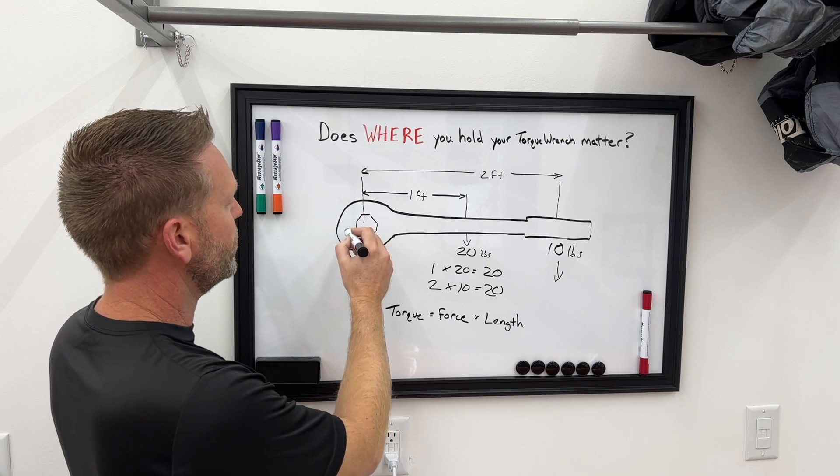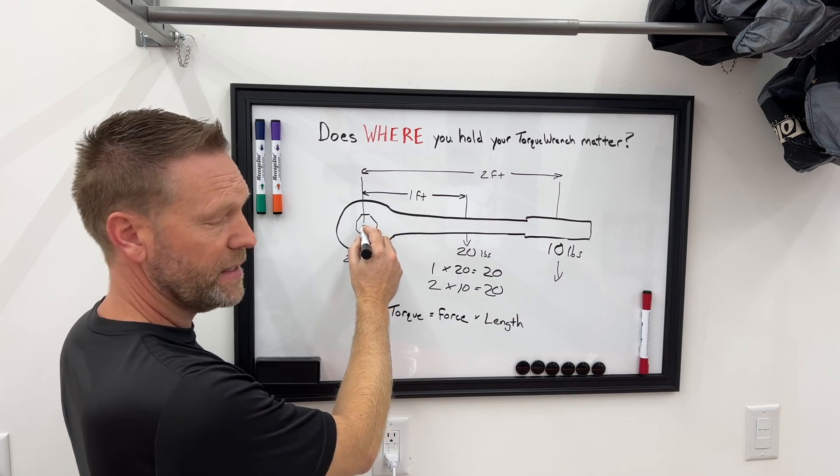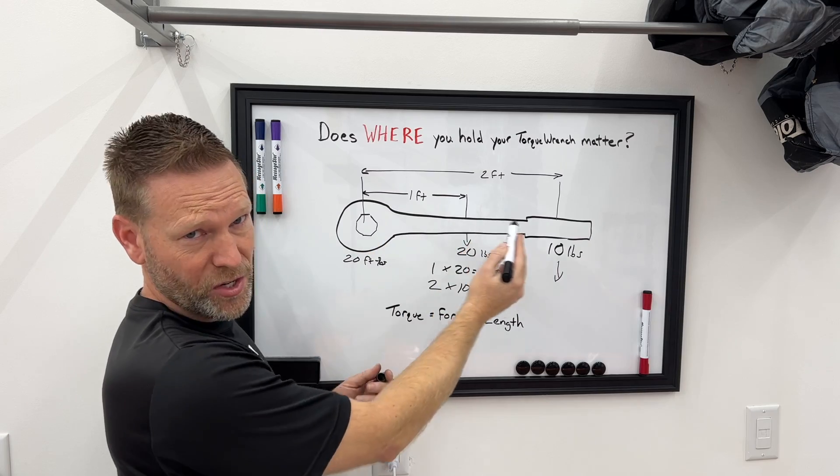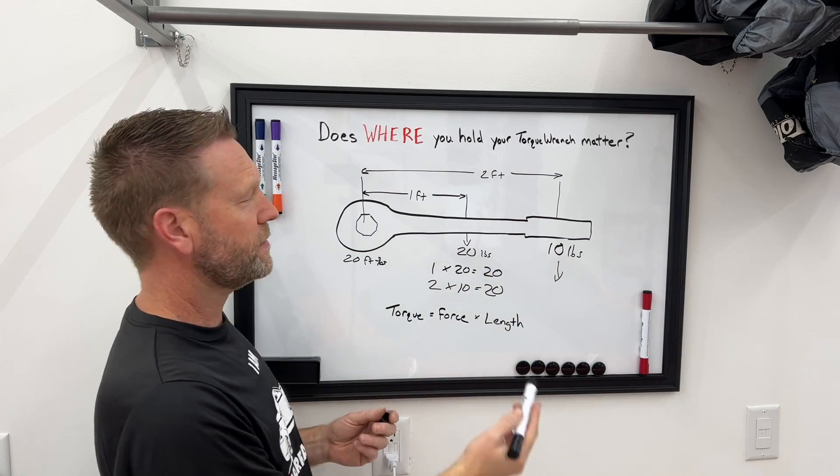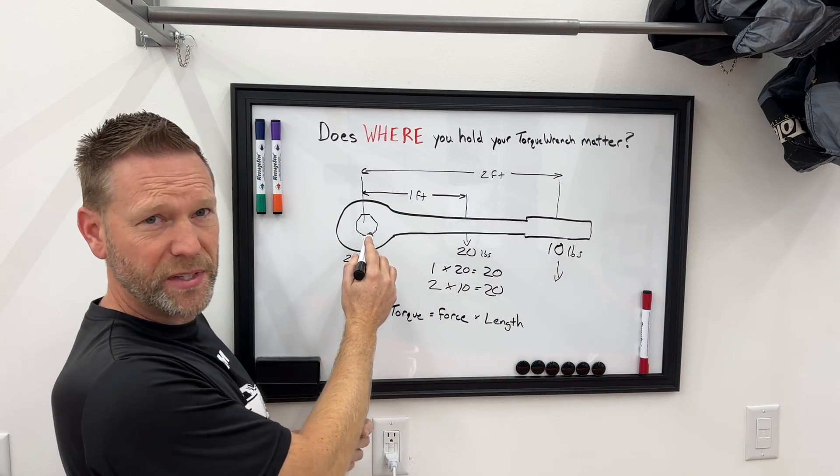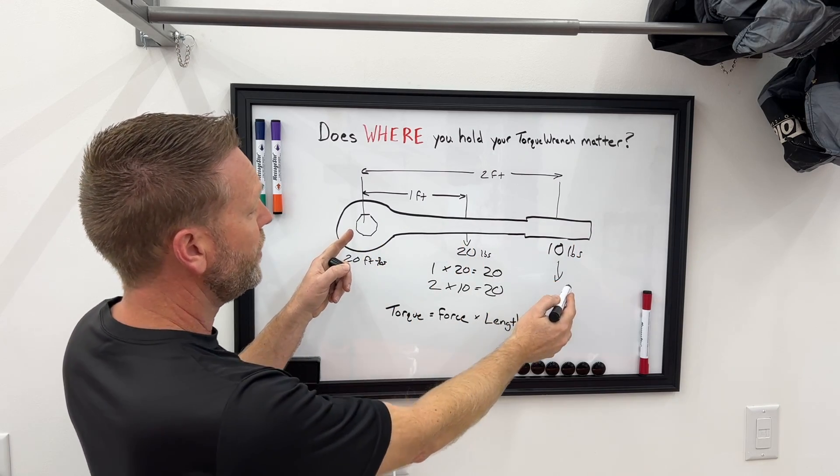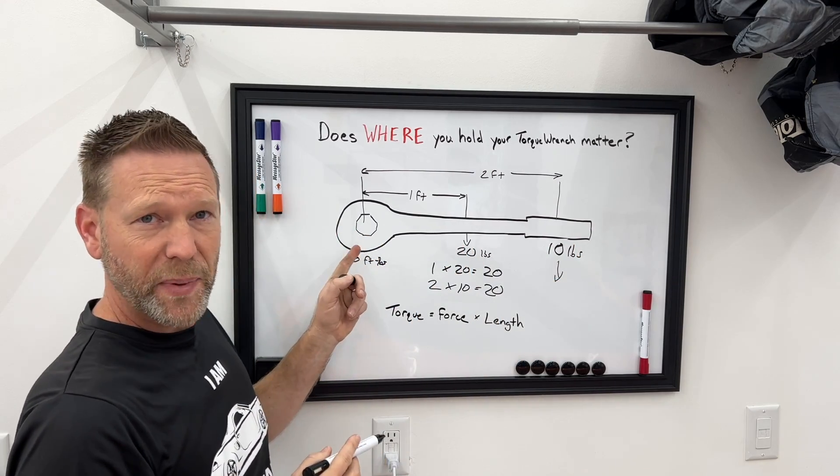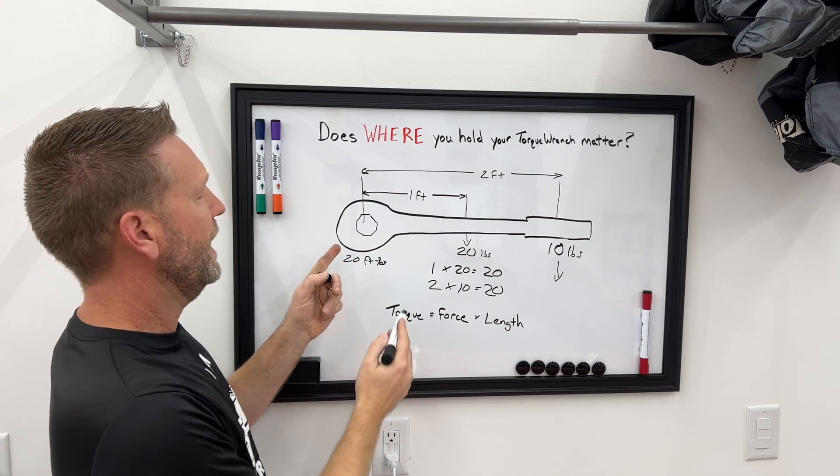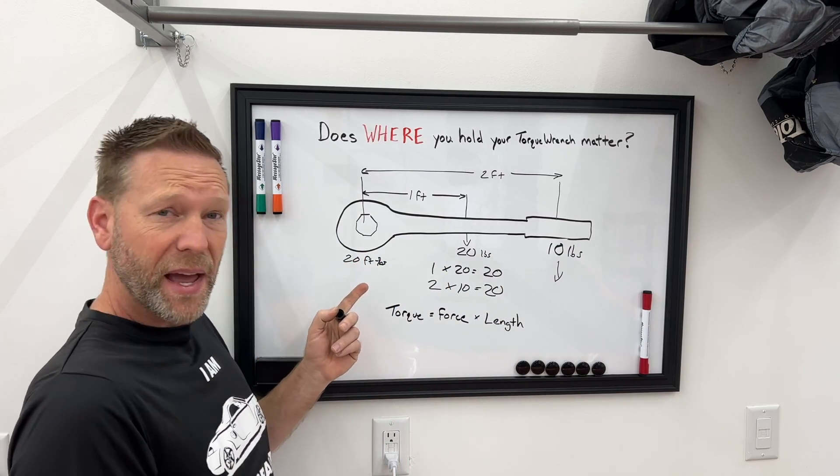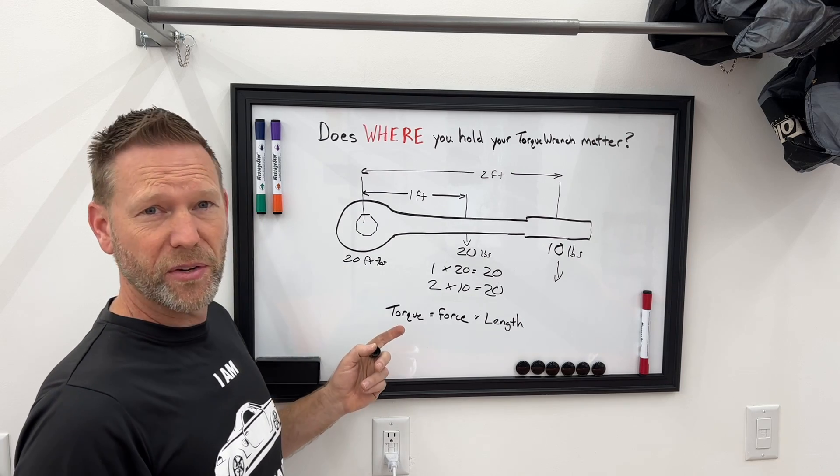But a torque wrench has its mechanism built in right here. And this mechanism doesn't know where you're holding the torque wrench. All it's doing is measuring the force. So either place you hold this, once it gets to 20 pounds, it's going to click. So it doesn't care where you're holding it. So why does it matter where you're holding it on a torque wrench?